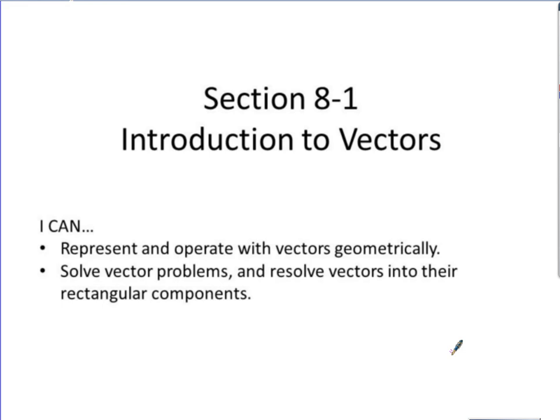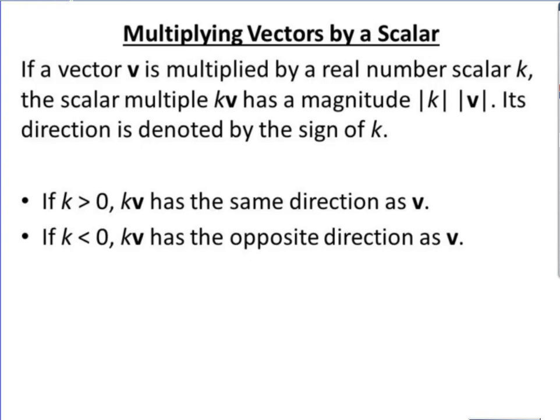This is section 8.1, part b, Introduction to Vectors. When you're multiplying vectors by a scalar, if you have a vector v multiplied by a real number scalar k, the scalar multiple kv has magnitude |k| |v|. You're going to take the magnitude or length of k and multiply it by the magnitude of vector v.